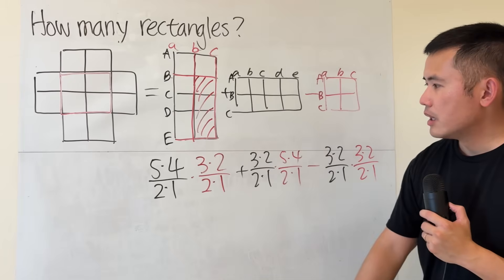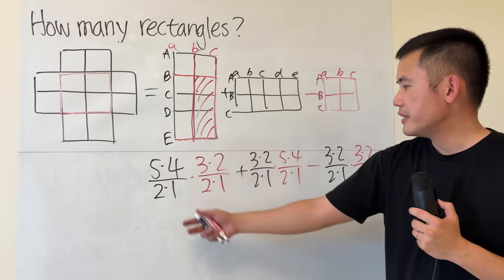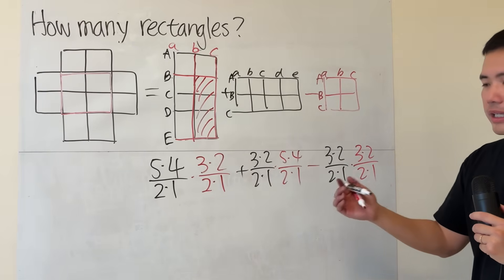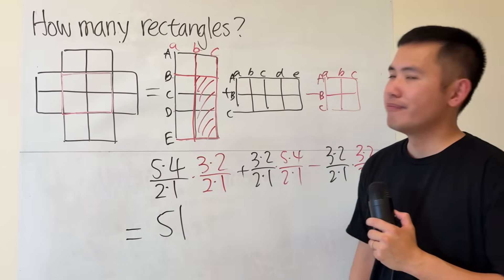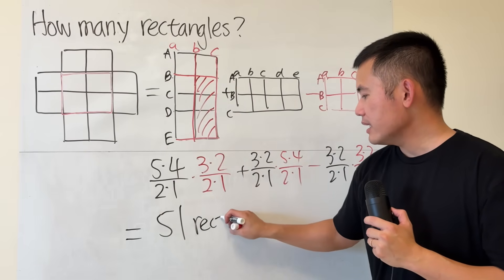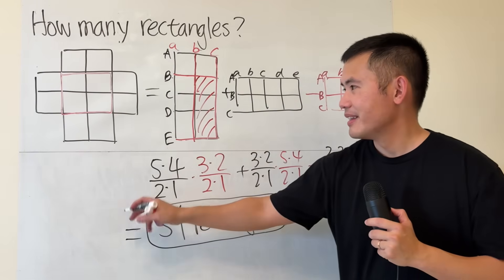Anyways, though, so, this right here will be 10 and this right here will be 3. So, 30 plus another 30, that's 60. And then, if you work this out, that will be 9. So, altogether, 60 minus 9. The answer is 51. So, we will have a total of 51 rectangles in that figure.